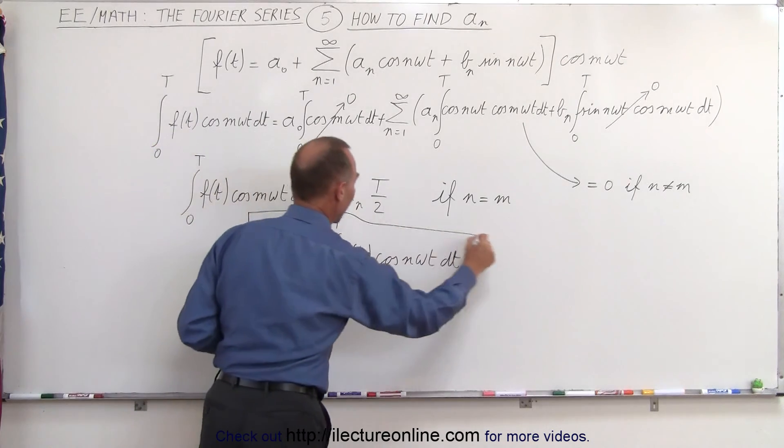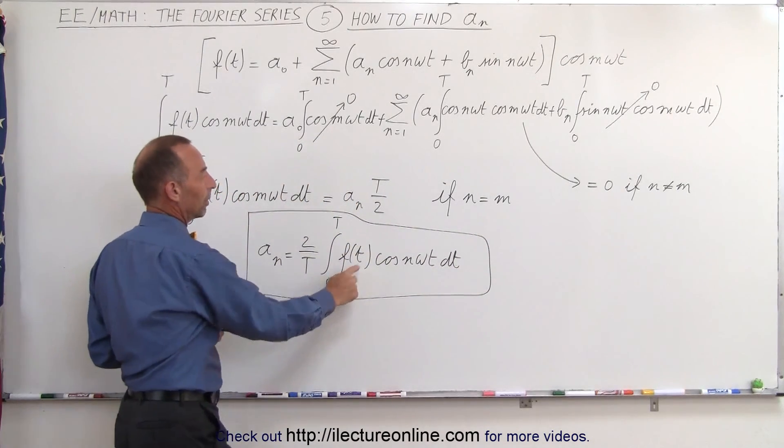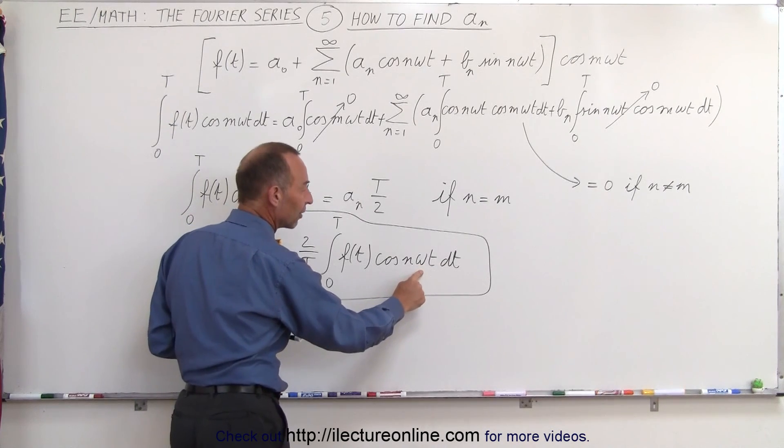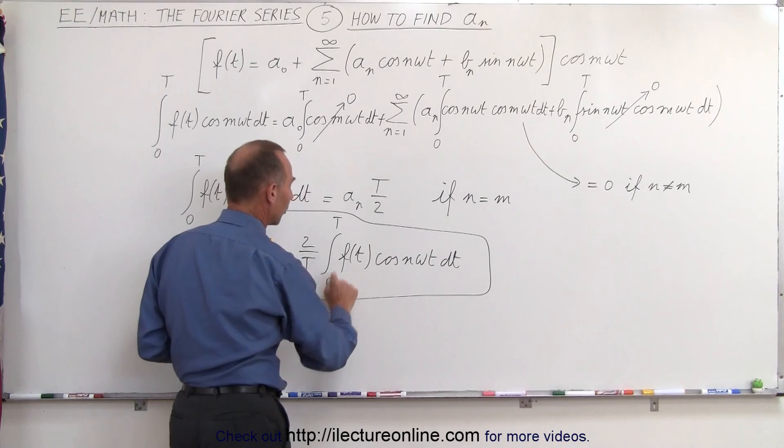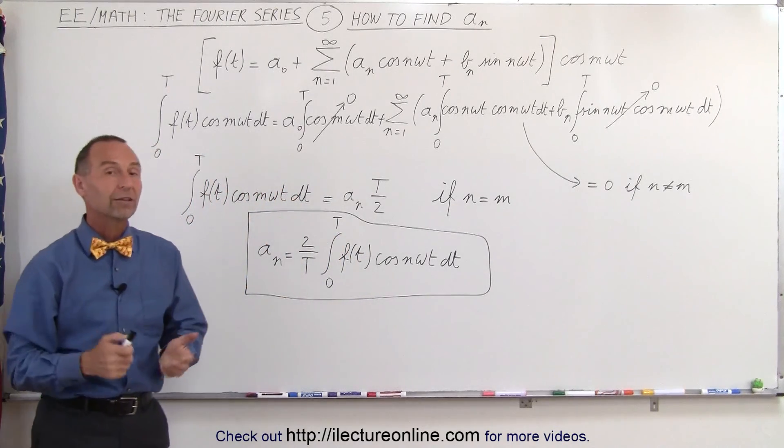All you need to do is find the original periodic function f of t multiply times the cosine of n omega t, of course, omega being the frequency of the function, from 0 to one single period. And that's how you find all your a sub n's.